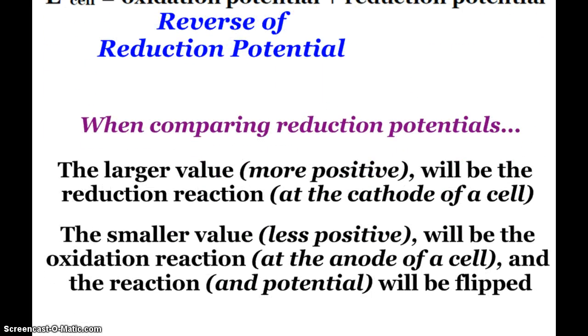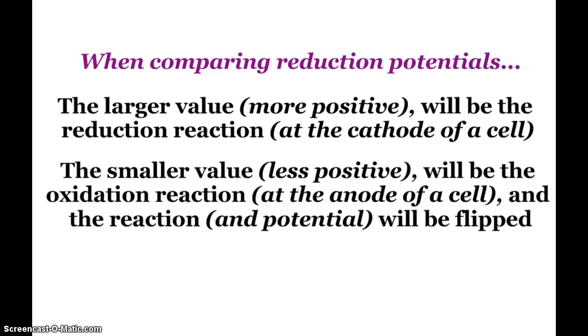If we're comparing reduction potentials, looking at your list of reduction potentials or a few of them on an exam to determine which reaction is going to stay reduction and which reaction is going to become the oxidation reaction - the larger value, the more positive the value of the reduction potential is going to stay at the cathode of the cell. That is going to be our reduction reaction.